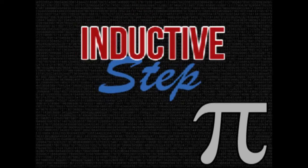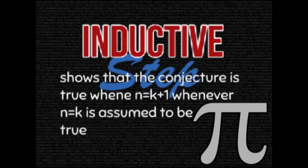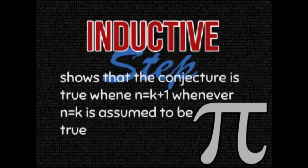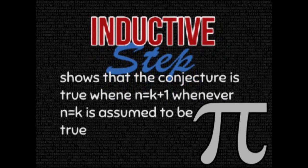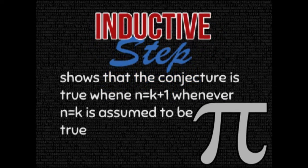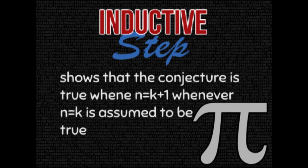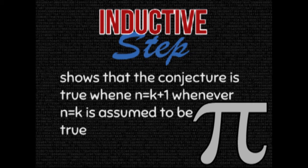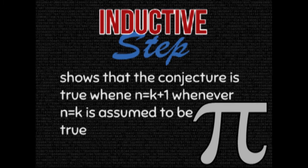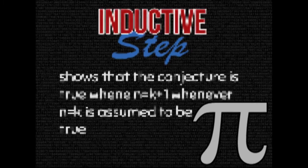The next step is the inductive step. On the inductive step, we assume that the conjecture is true when n is equal to any number. Then, we prove that it is also true when n is equal to the succeeding number.